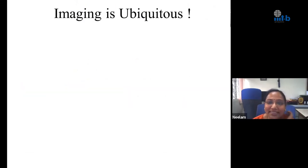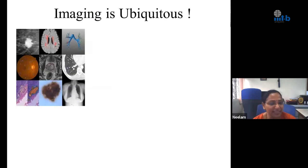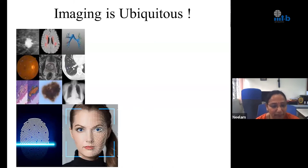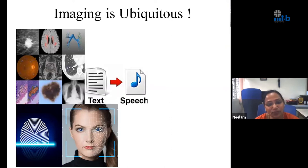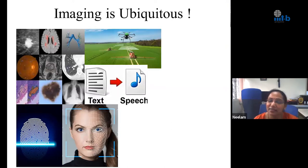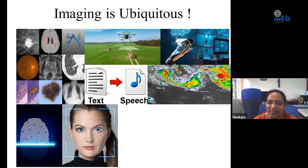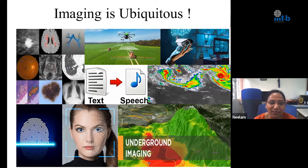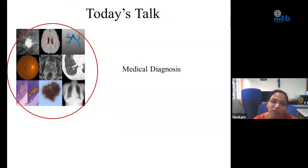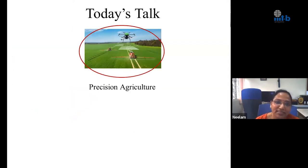As we all know, imaging is everywhere. Healthcare — every aspect of healthcare is covered by some sort of imaging. Biometrics — we've all gone through the Aadhaar procedure. Text-to-speech conversion has it. Precision agriculture has it. Video surveillance is all about imaging. Satellite imaging, underground imaging, imaging for fun — you just name it and imaging is there. In today's talk, we will look at two different domains: its role in medical diagnosis and its role in precision agriculture.